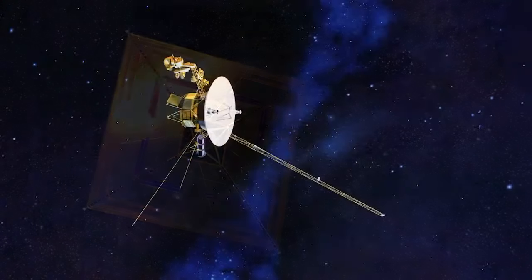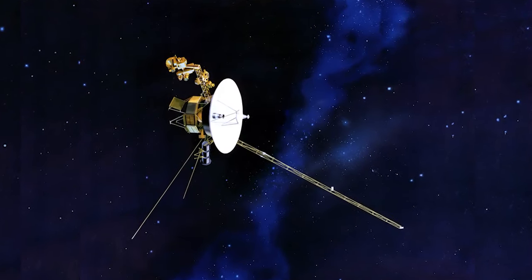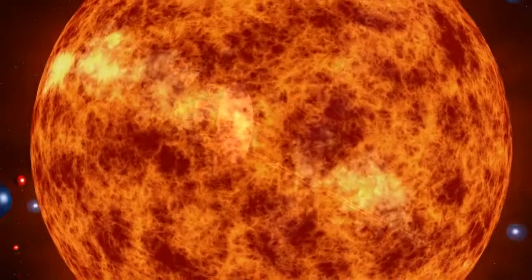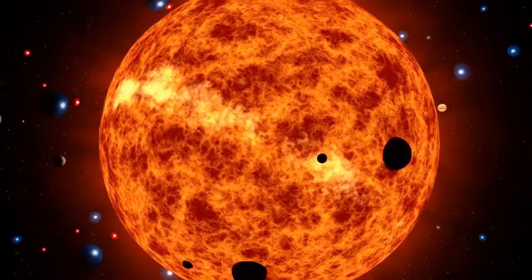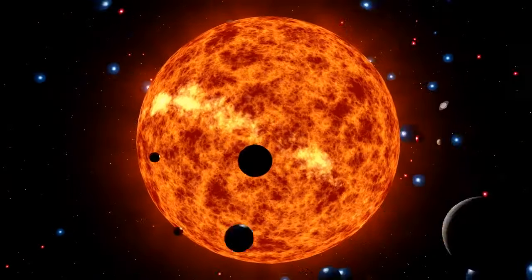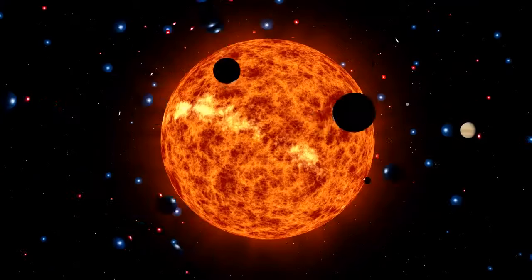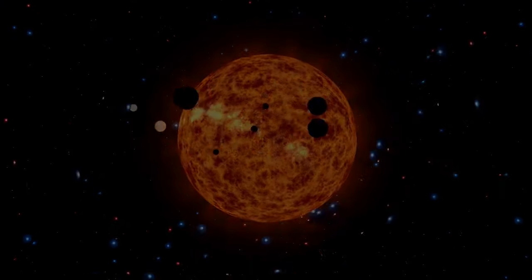For example, it took the Voyager spacecraft 35 years to reach the edge of the solar system. The Sun continually releases photons and electrons into the solar wind. A spacecraft can achieve high speeds by riding this solar wind.